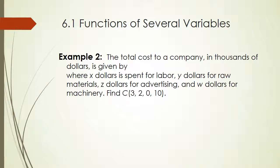Here's another example. This time we have four variables. The total cost to a company in thousands of dollars is given by C of x, y, z, w equals 4x squared plus 5y plus z minus the natural log of w plus 1. Now, this looks very intimidating, but notice they also give you the values for each of those variables. You put in 3 for x, 2 for y, 0 for z, and 10 for w. Pause the recording, try this problem, and resume to check your answer.